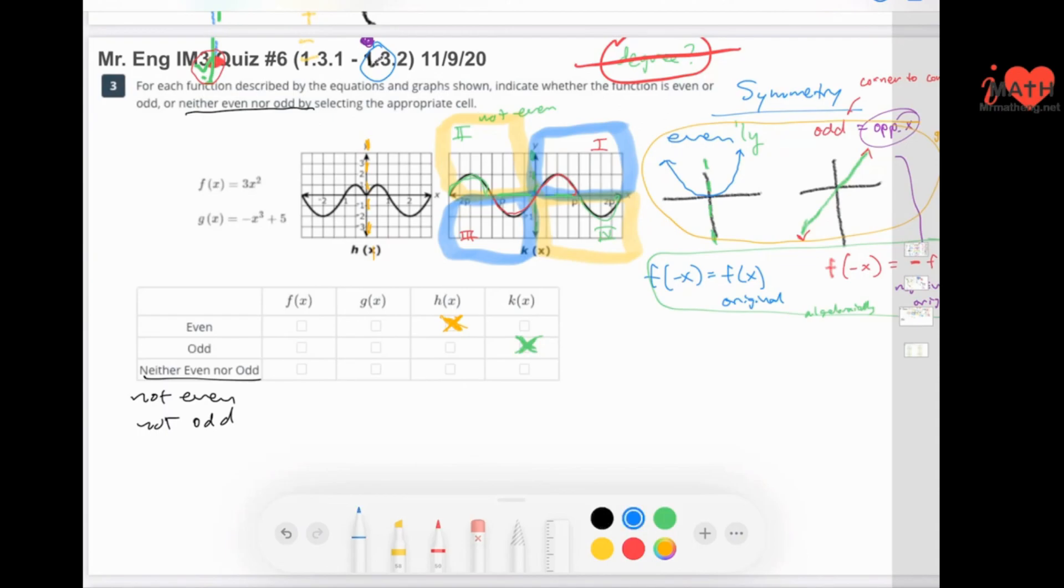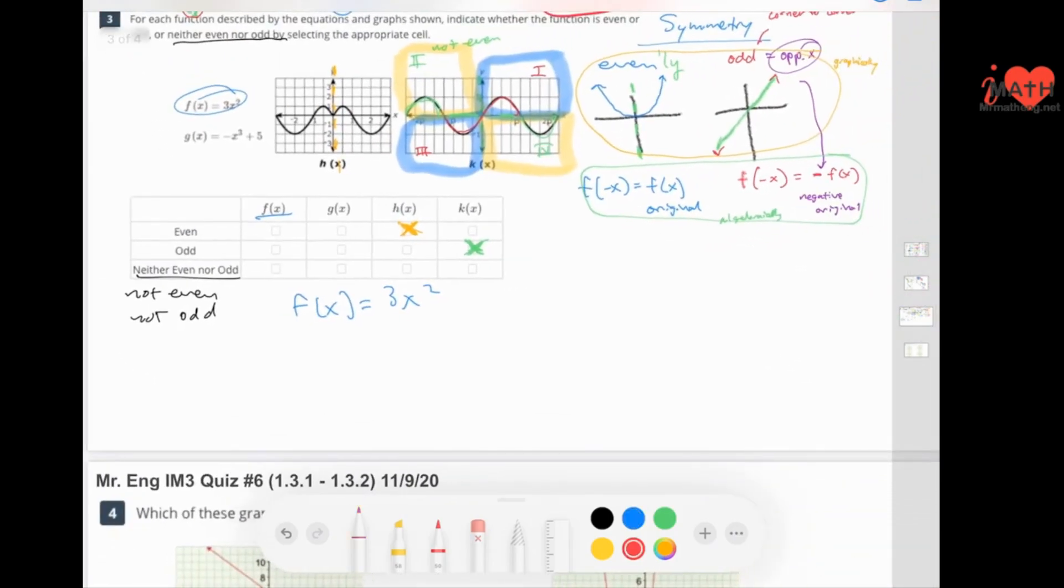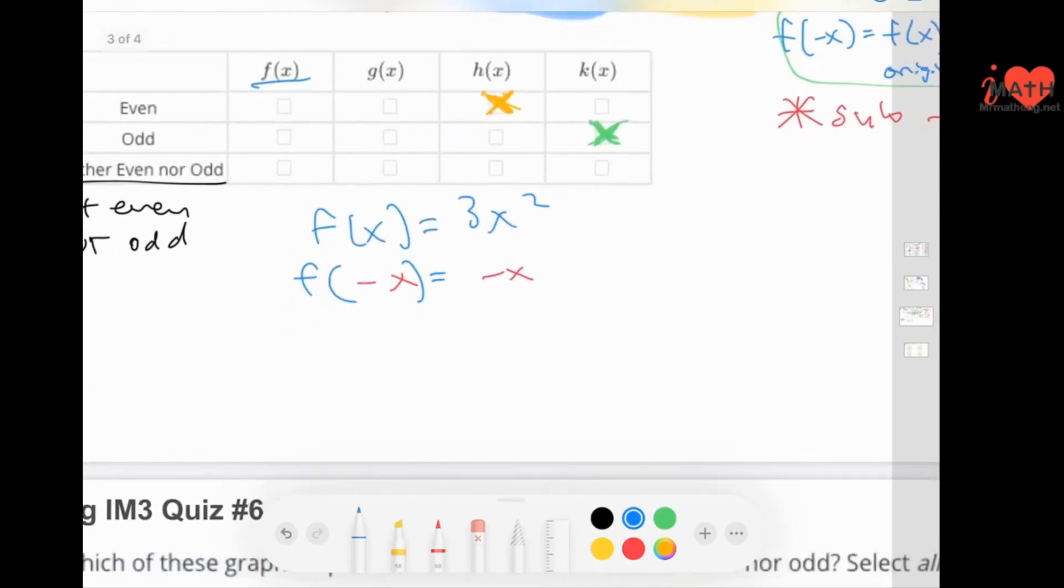Let's do F of X. Here, I have to do this algebraically. When you're doing this algebraically, I have that star there. And you need to sub negative X for every X value. We're going to put in a negative X for every X value. Now, don't worry about the left side of the equation. Don't forget, we're going to use PEMDAS, which tells me I'm going to use the exponents first. So negative X times negative X is X squared, and 3X squared times 3 is just 3X squared.